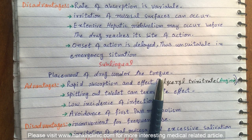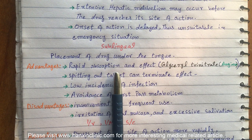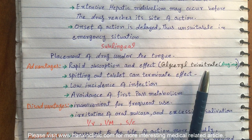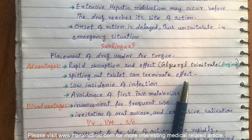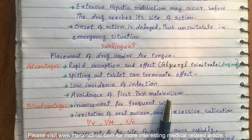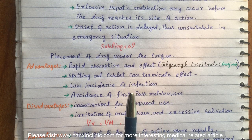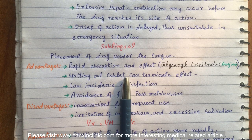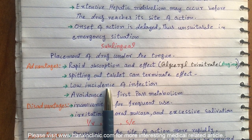The advantages of sublingual route are: rapid absorption and rapid effect — for example, glyceryl trinitrate in angina; spitting out the tablet can terminate the effect; low incidence of infection; and avoidance of first-pass metabolism, also known as extensive hepatic metabolism. These are the most common advantages of sublingual route.